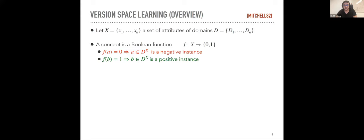Now let's talk about version space learning. There is a similarity between the constraint acquisition problem and what the machine learning community did in version space learning. Version space learning, introduced by Tom Mitchell in 1982, is a framework for understanding supervised learning. We have a set of attributes taking values in given domains, and a boolean concept function that classifies instantiations as positive or negative.